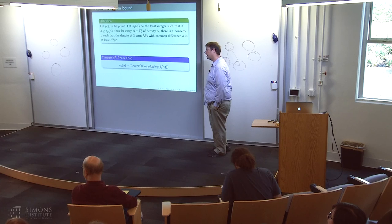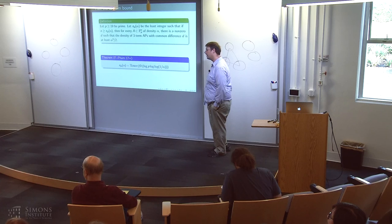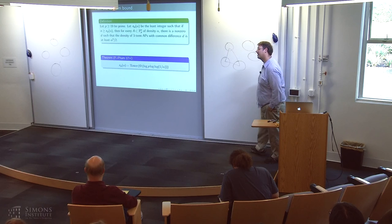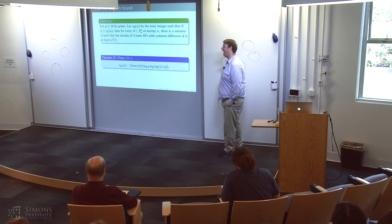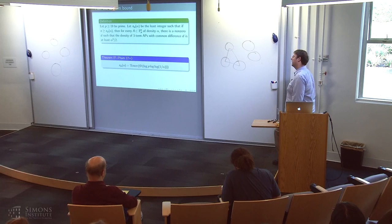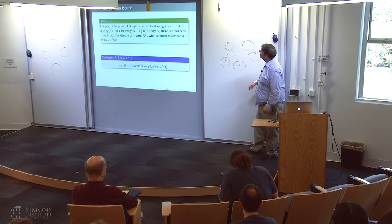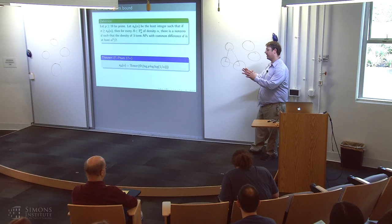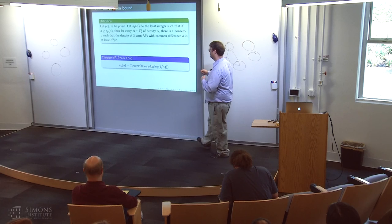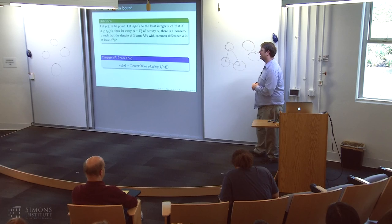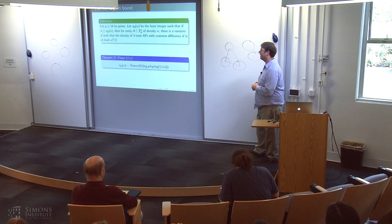Final Q&A: presumably there is no reduction from the popular difference problem to triangle removal, otherwise you'd get a lower bound for triangle removal. Could there be a reduction to graph removal where the size of the graph depends on epsilon? The speaker says they'd be very interested in that but don't know. In the arithmetic setting, things become regular with themselves within subsets, making it more natural. It's unclear what the right thing should be in the graph setting — maybe in the graph setting there's no application where the tower type is actually needed, except essentially for itself.